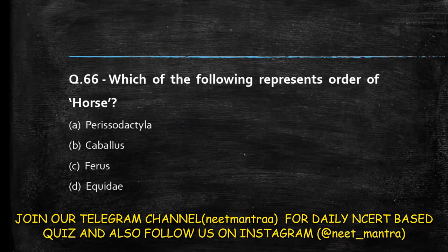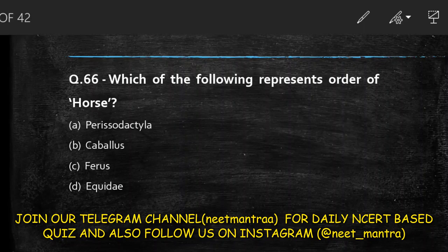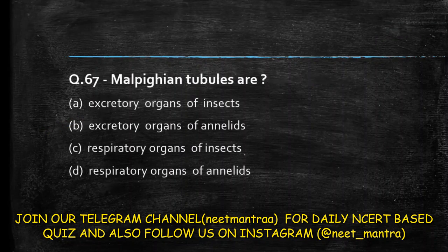Next question: which of the following represents the order of horse? Options are Perissodactyla, caballus, ferrous, equidae. This is a taxonomy recall question. The answer is option A: Perissodactyla.